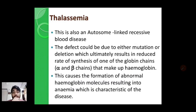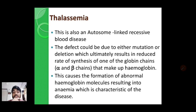The next Mendelian disorder is thalassemia. Thalassemia is also an autosome-linked recessive disease — the mutated recessive allele is present on autosomes. This defect is caused due to either mutation or deletion which ultimately results in a reduced rate of synthesis of one of the globin chains. Hemoglobin consists of two alpha chains and two beta chains made up of alpha globin and beta globin proteins, coded by specific genes. If any mutation or deletion occurs in these genes, the rate of synthesis of these globin proteins decreases — that is the major symptom of thalassemia.